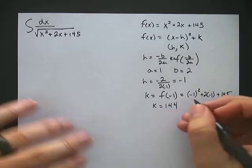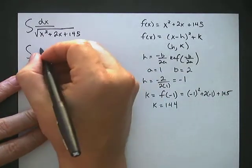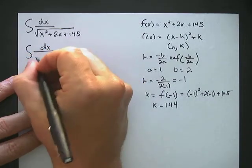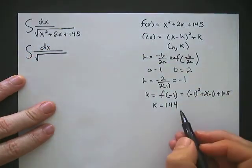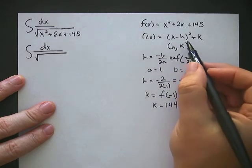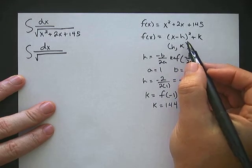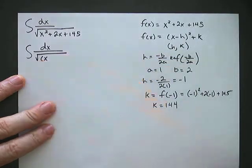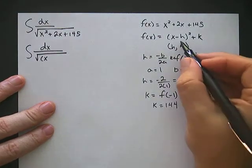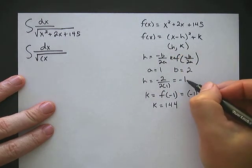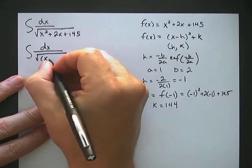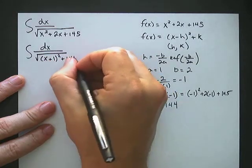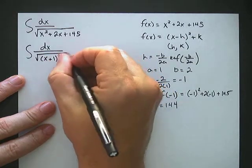So we can now rewrite the problem: dx over the square root, putting it in vertex form with h and k. The formula says x minus h squared, and since h is negative 1, it becomes x plus 1 squared, plus 144. That's our k.